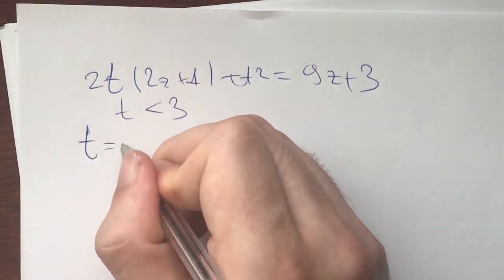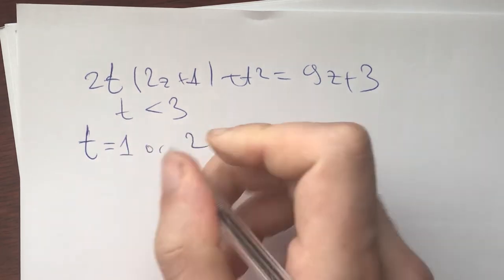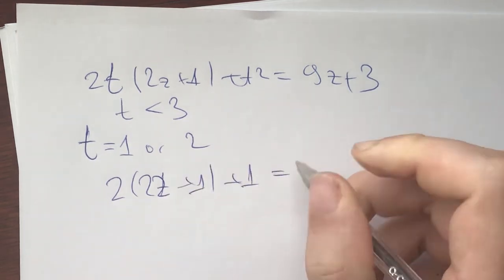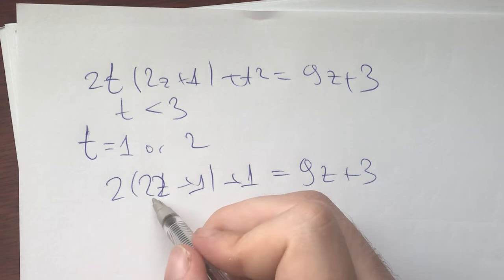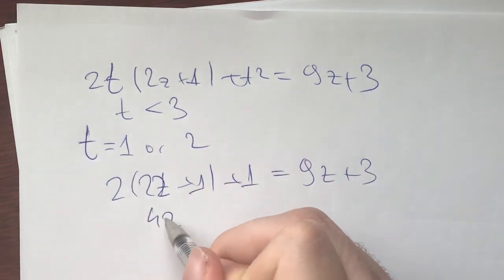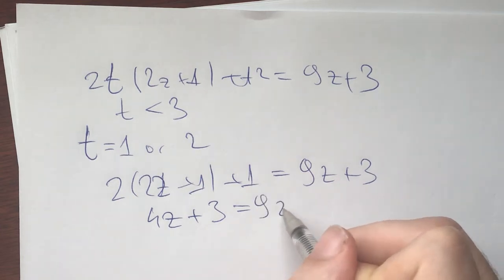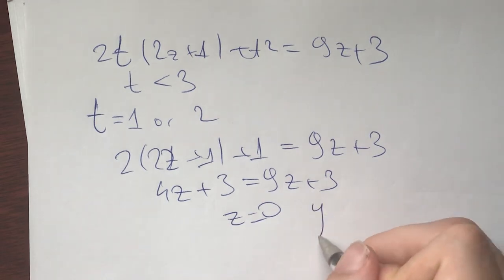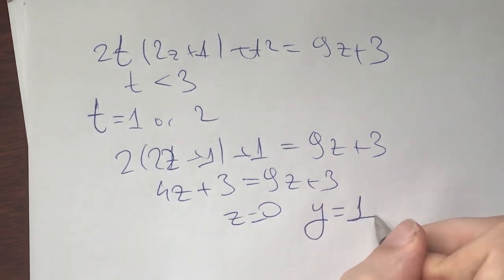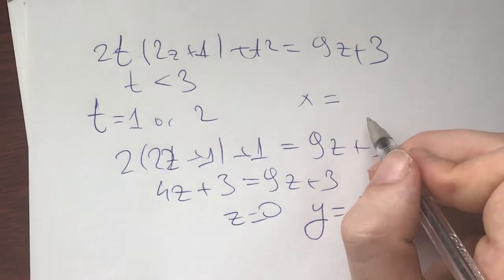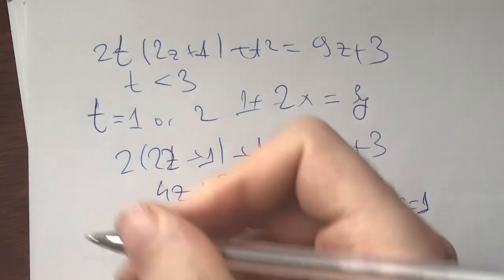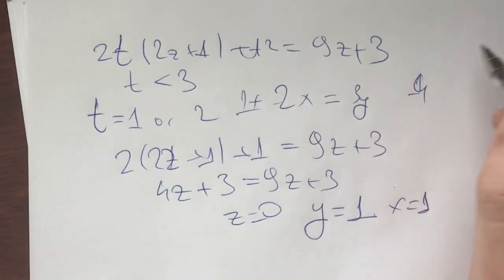We have that 2t(2z+1)+t² = 9z+3. Now this implies t is less than 3. So we have two cases: t equals 1 or 2. If t is equal to 1, we will have 2(2z+1)+1 = 9z+3. 4z+3 = 9z+3, we'll get that z equals 0. And then that implies y equals 1. And now what is x? 2x+1 = 3y. And this implies x is 1. And this is a solution. We'll have 4 on both sides.